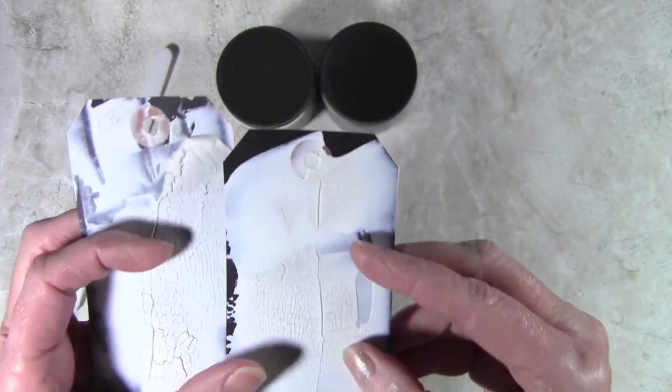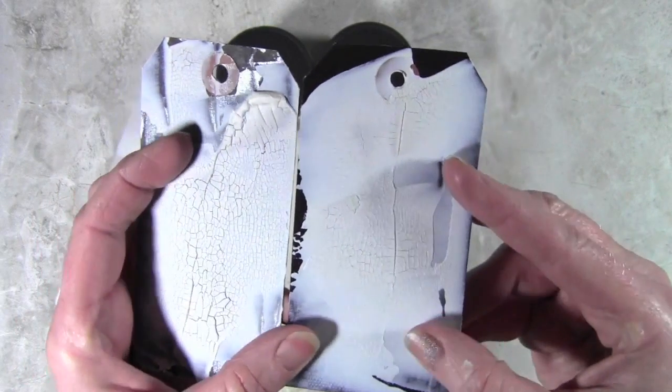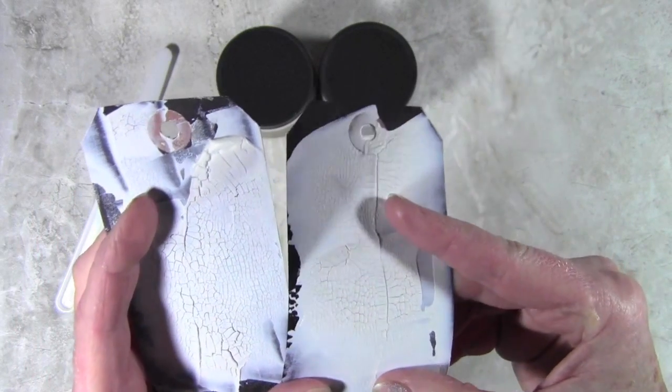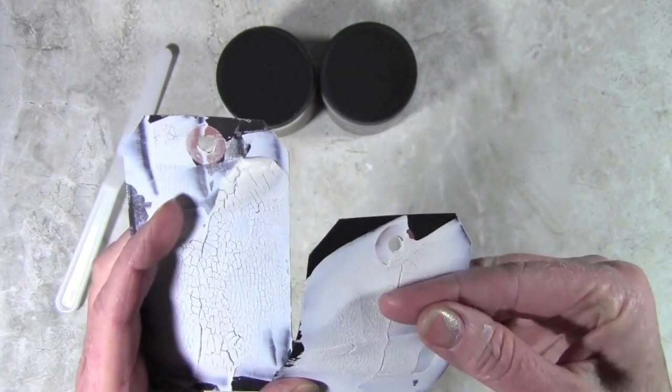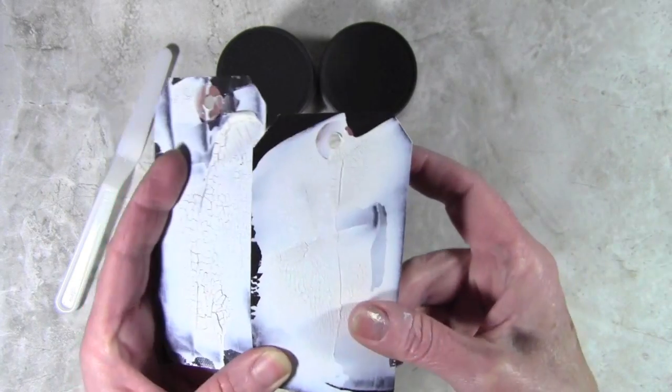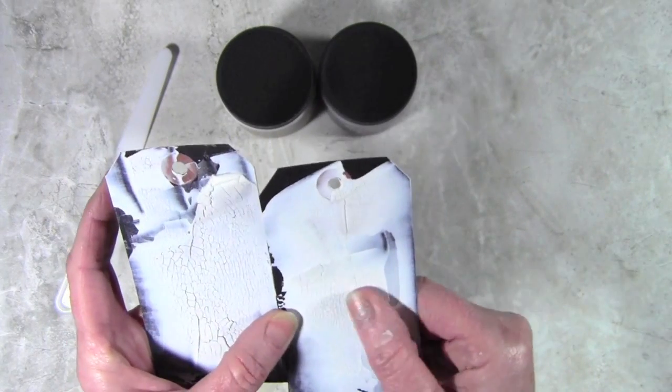So this is the one that was just done by itself, and I have to say in the side-by-side comparison it didn't quite crackle as well. So I am sold on putting an additional paste underneath before I use the crackle texture paste.